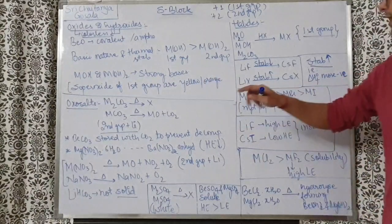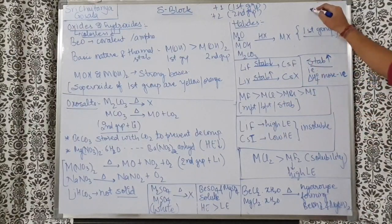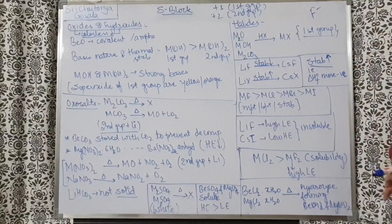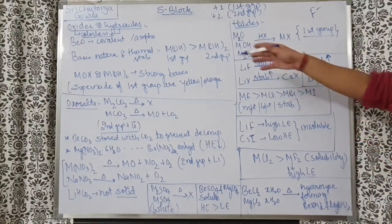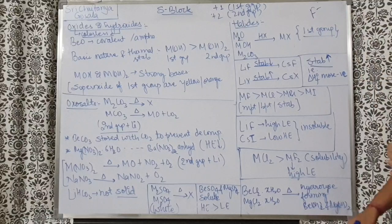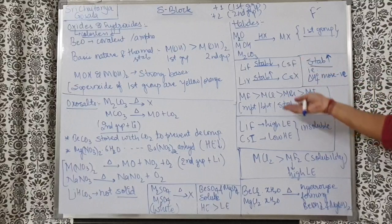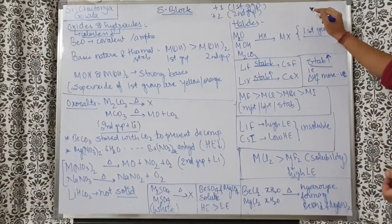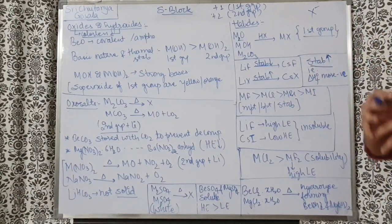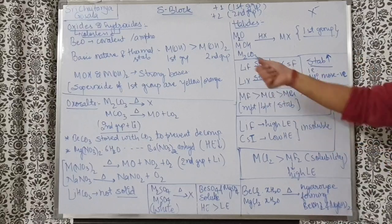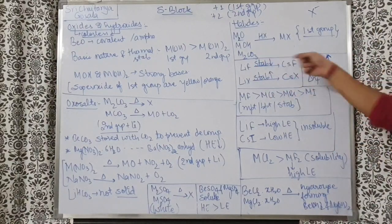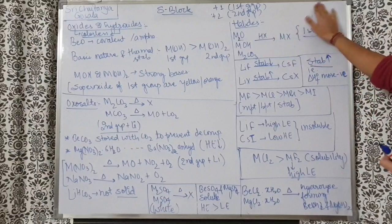The general trend is MF > MCl > MBr > MI for melting point, boiling point, and stability. That means LiF > LiCl > LiBr, and similarly CsF > CsCl. These two trends — stability of fluoride vs. larger halides — are very different things, so remember them separately. For the smaller anion (F⁻), top to bottom stability decreases; for larger anions (Cl⁻, Br⁻, I⁻), top to bottom stability increases.